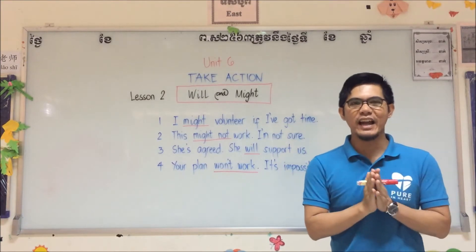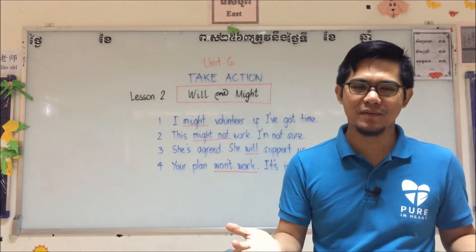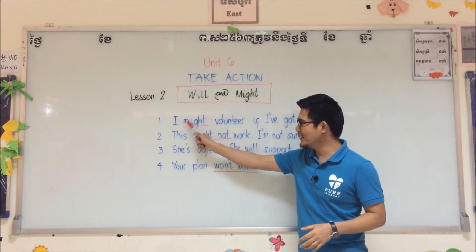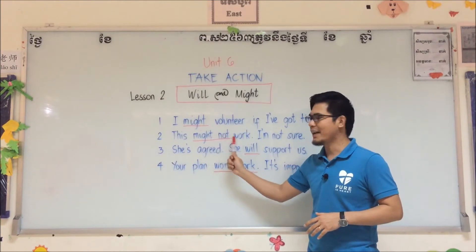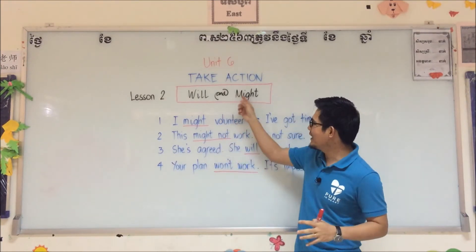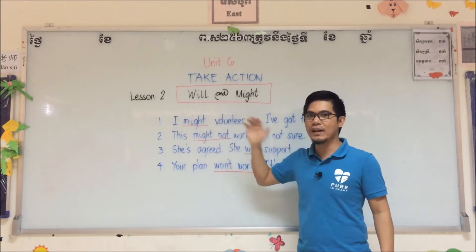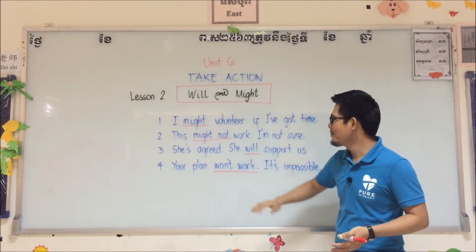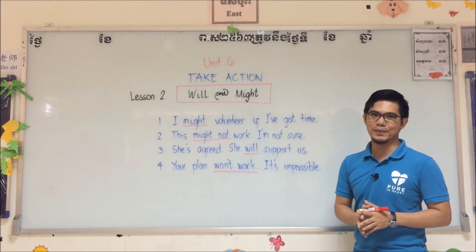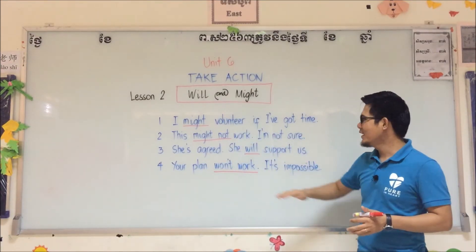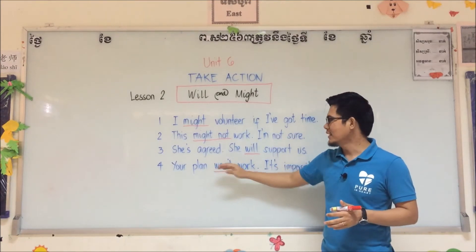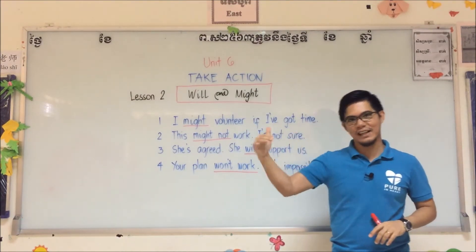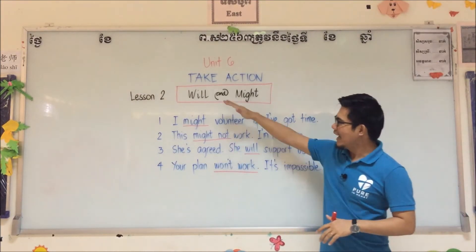Based on our examples, what have you observed? For number one we use 'might,' and for number two we use 'might not' — they are contrary: might and might not. We use 'might' for an affirmative sentence and 'might not' for a negative sentence. For numbers three and four, we use 'will' for affirmative, and 'won't' — which is the negative of 'will not' — for negative. So we have two pairs: might/might not, and will/won't.